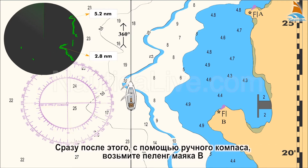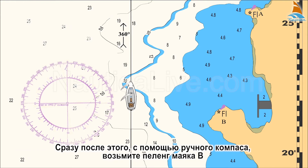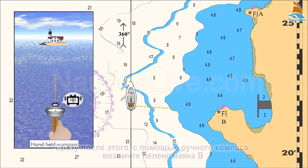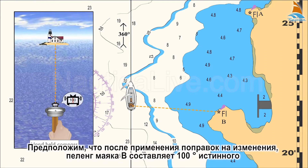Immediately afterward, using the handheld compass, take a bearing of Lighthouse B. After applying the correction for variation, the bearing of Lighthouse B is 100 degrees true.